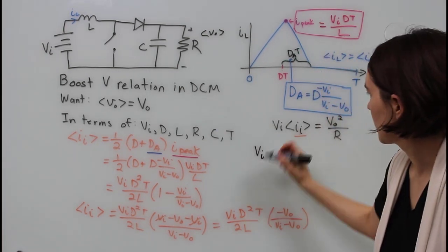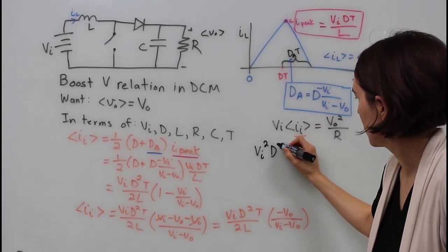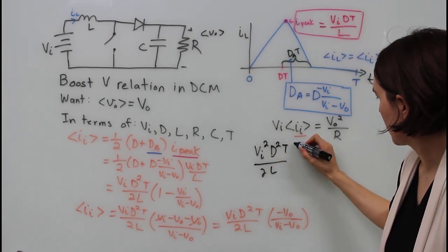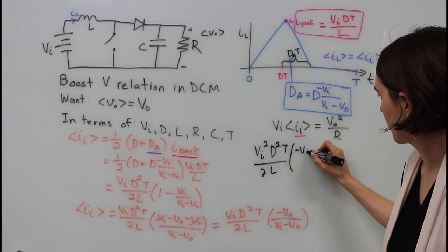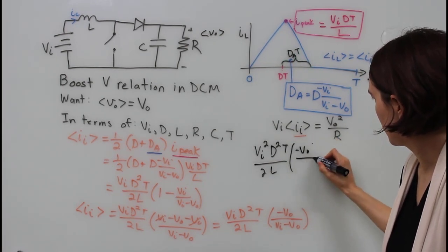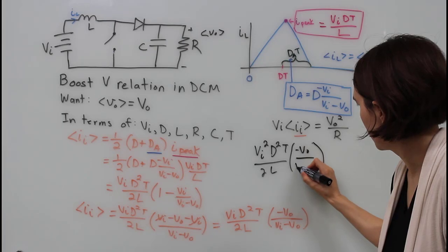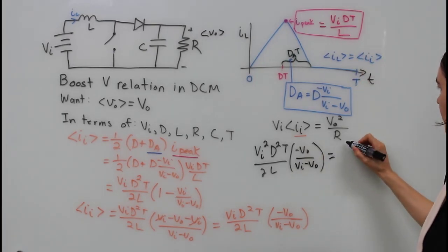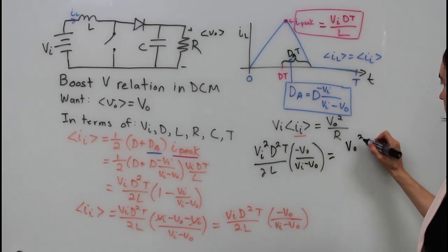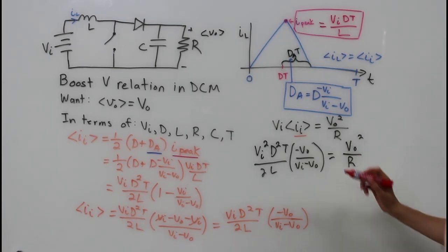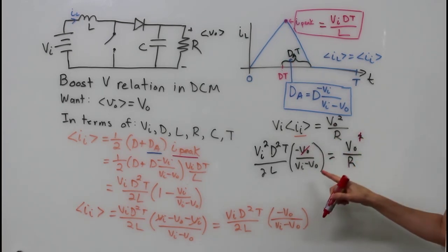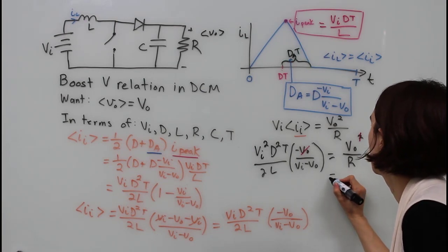Let's substitute that in here. Then we put the output power side of the power balance equation. Cross out the V out on both sides and now we want to solve for V out in terms of everything else.